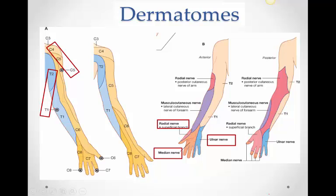On the medial side, notice the thoracic dermatomes. The T2 dermatome has a large lateral cutaneous branch which comes in to supply the floor of the axilla and the medial side of the arm — which is why referred pain from the heart comes to the medial side of the arm.